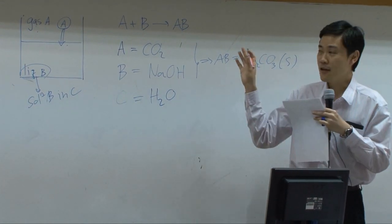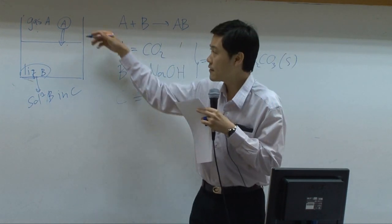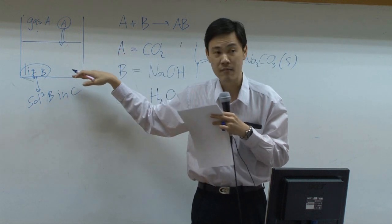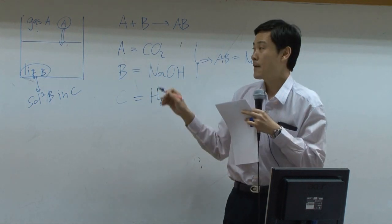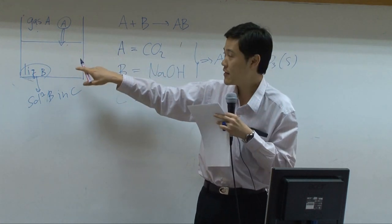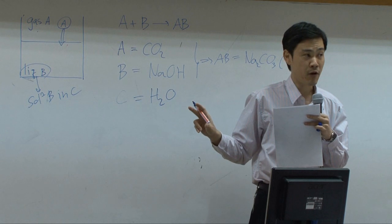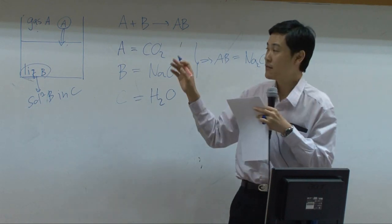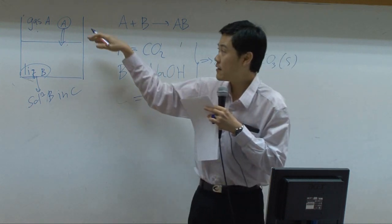If the reaction is slow, then A would have a chance to pass through the boundaries downward toward the bottom of the beaker. The concentration of A near the surface is higher than concentration of A further down, so this difference in concentration is the driving force for the diffusion of A downward.